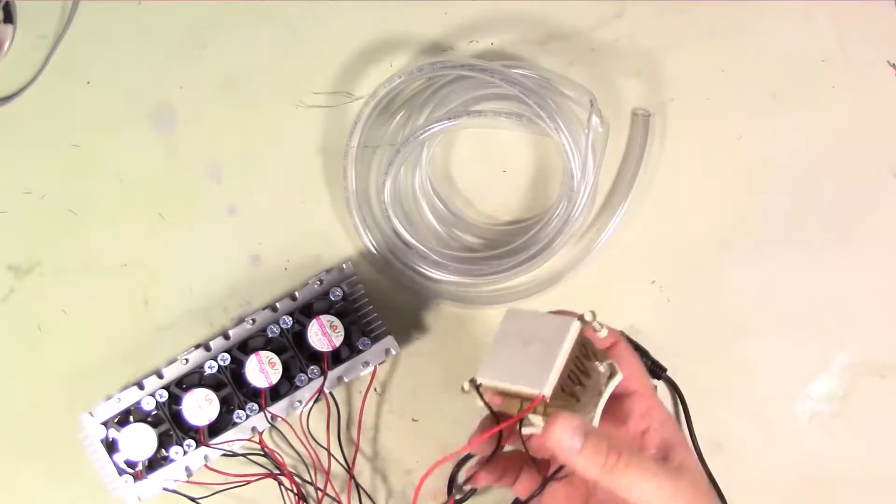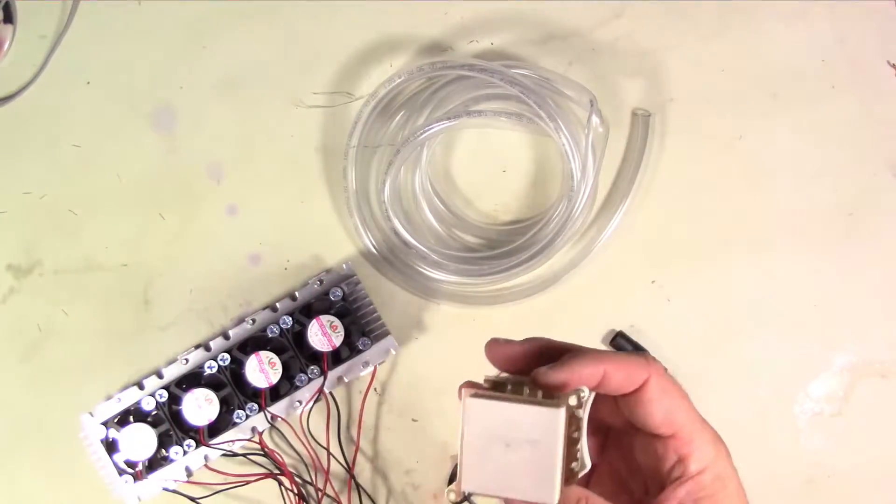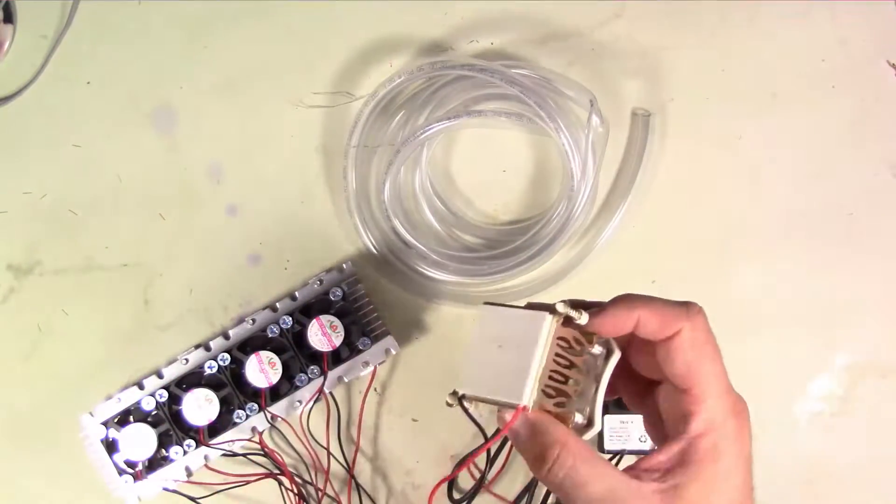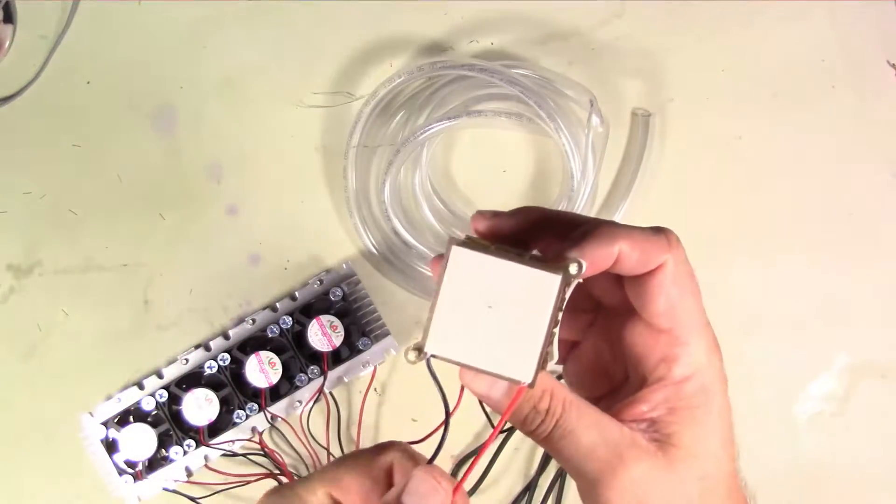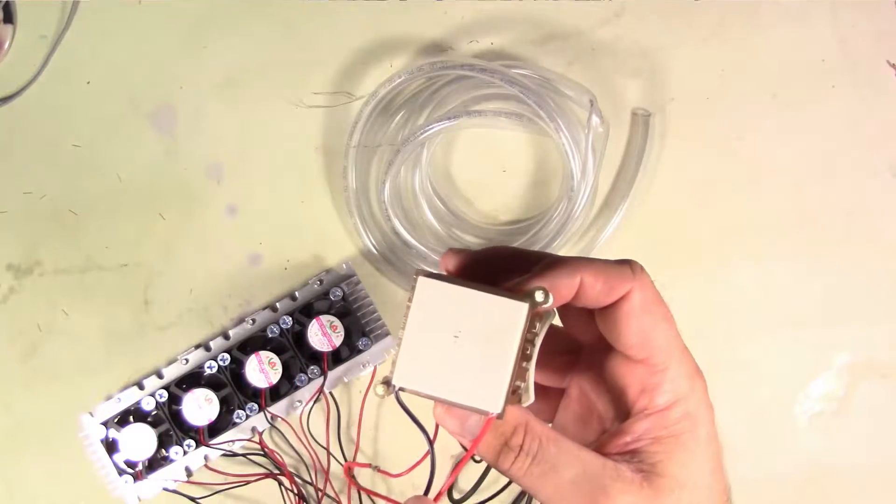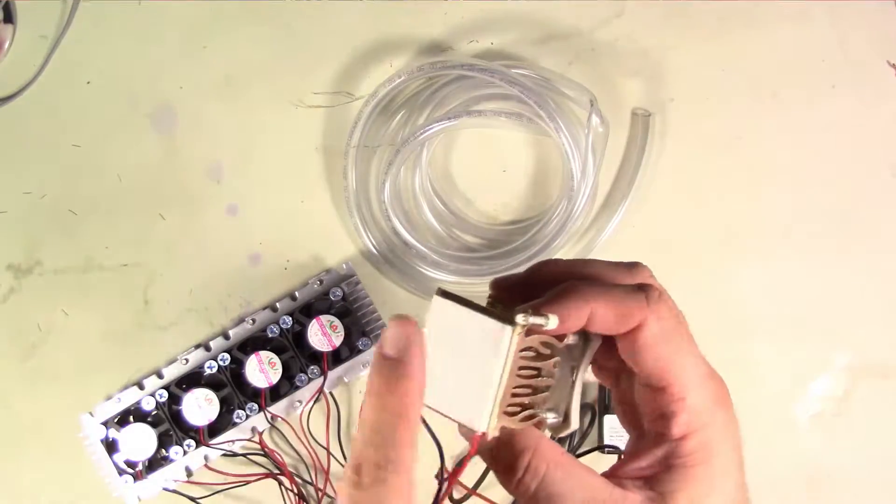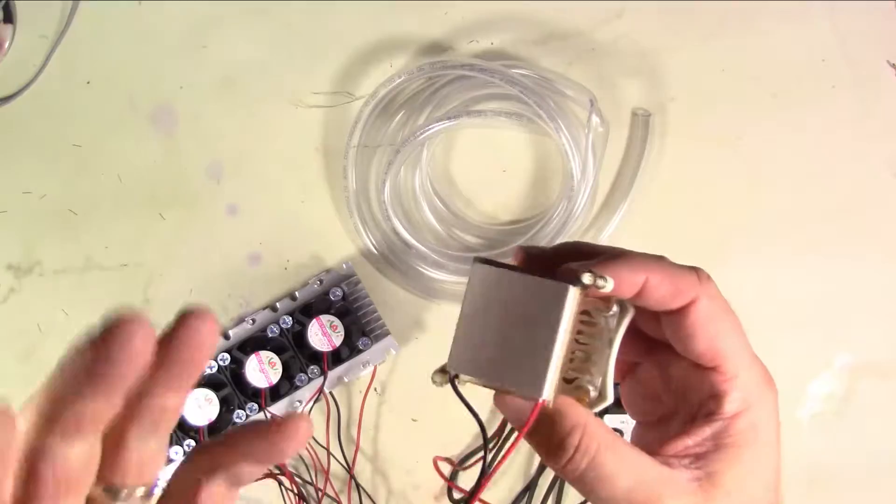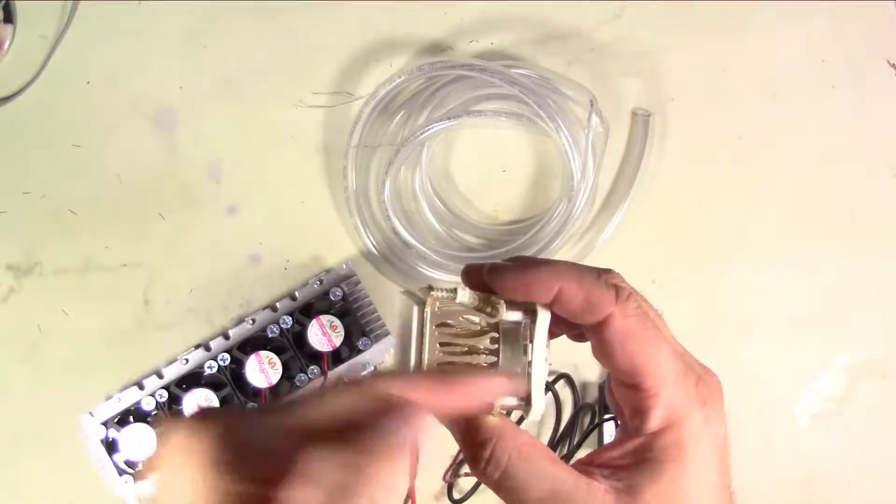What Peltier junctions are is they're basically an electric thermal pump. When you turn them on, they will efficiently move heat from one side to the other side. So if you hook it up one polarity, they run off DC, this one I believe is 12 volt. If you run 12 volts through it, plus to minus, this side will get hot and the other side will get cold. If you reverse the polarity, this side will get cold and this side will get hot. The reason that it's doing that is it's actually transferring the heat from this plate to the other plate.